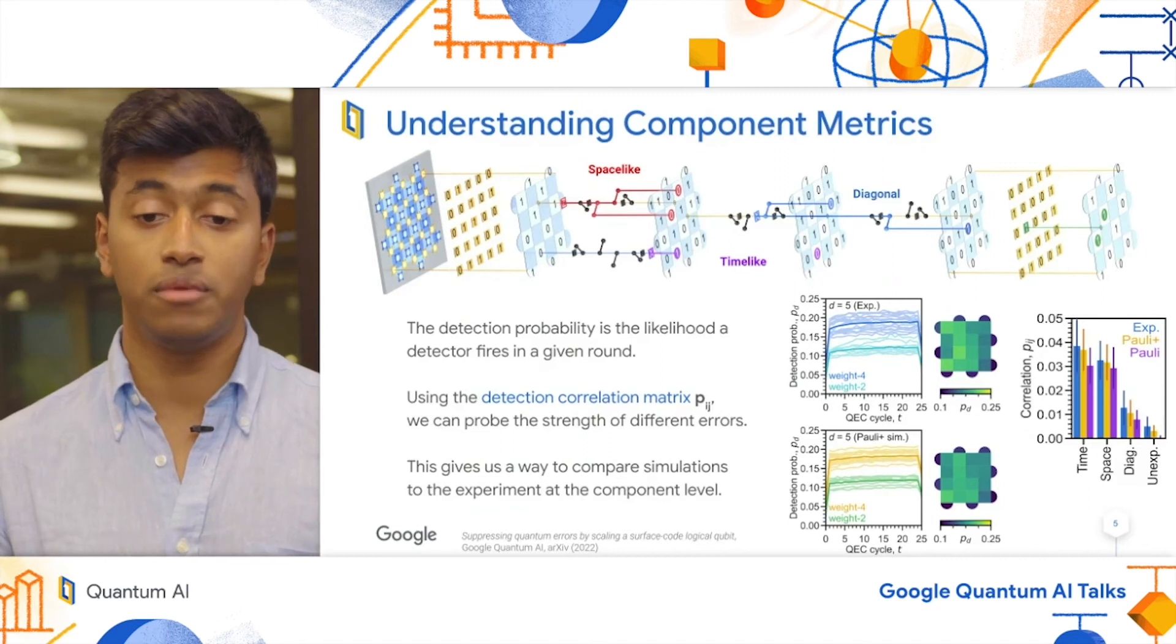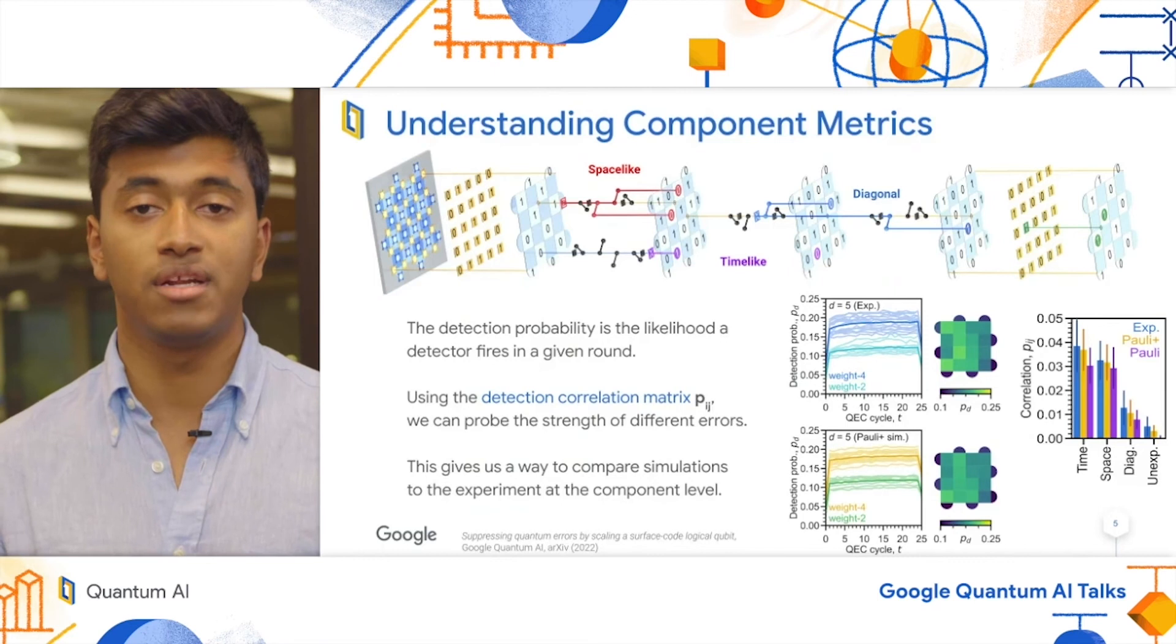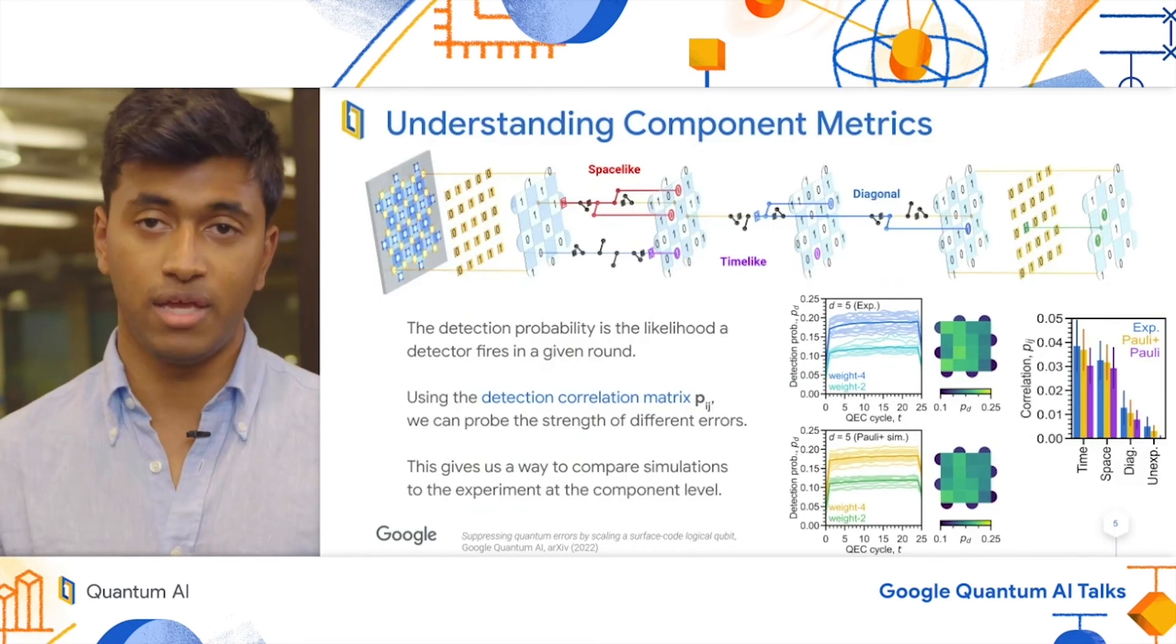You can see that the Pauli-plus simulation, which is in yellow, is pretty close to the experiment, in blue, while the Pauli-simulation lags behind, likely because it does not include as many error models which cause most of the edges in our system.